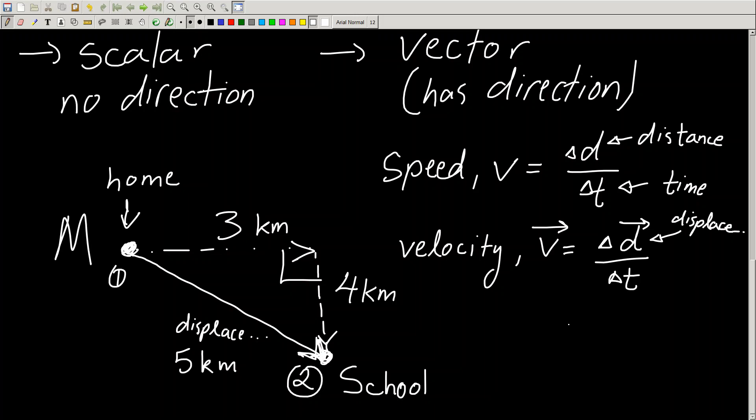To get the velocity vector, what I would have to do is displacement over time. Now, let's say to go from point one to point two, to go from home to school, it takes me about 50 minutes. So in 50 minutes, I go from home to school.